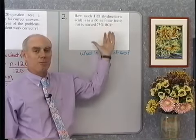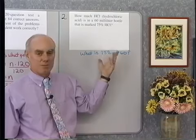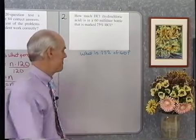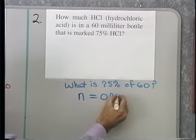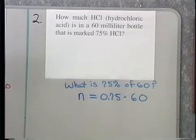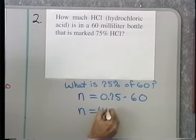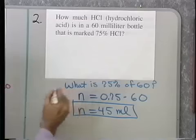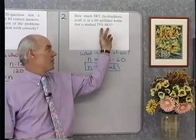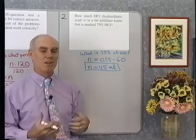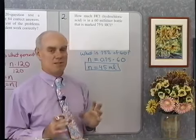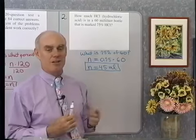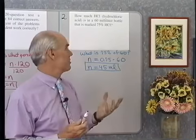That's a direct translation of this problem into one of my three basic percent problems. To solve it, I translate into an equation and solve. N equals 75 percent, which is 0.75, times 60. Doing that multiplication on a calculator gives N equals 45 milliliters. So if I have a 60-milliliter bottle marked 75 percent HCl, that means 45 milliliters of what's in there is hydrochloric acid.